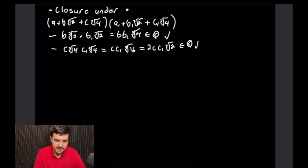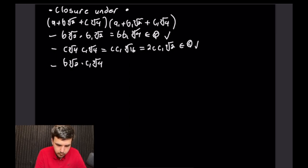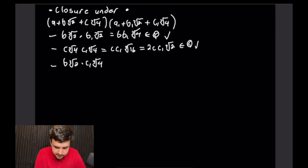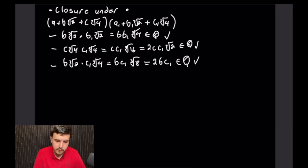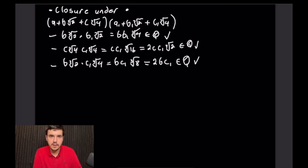For cross terms b·c: b∛2 · c₁∛4 = bc₁·∛8 = 2bc₁, a rational number in Q. By symmetry c∛4 · b₁∛2 works identically. All possible coefficient combinations remain in Q, so the product of any two elements stays in the set. This set is closed under multiplication and is therefore a ring.